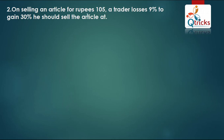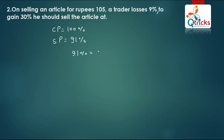The next question is: On selling an article for Rs. 105, a trader loses 9%. To gain 30%, he should sell the article at what price? It is the same type of question. Cost price is always 100%. There is a 9% loss, so SP equals 91%. Therefore 91% equals 105.